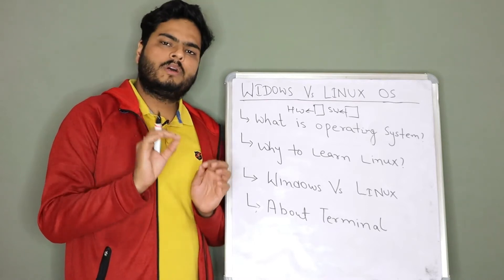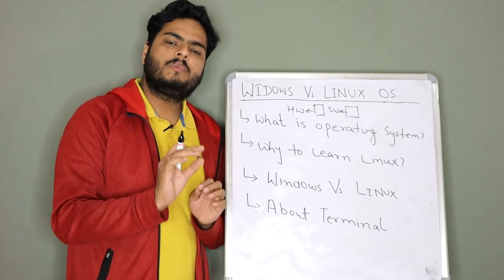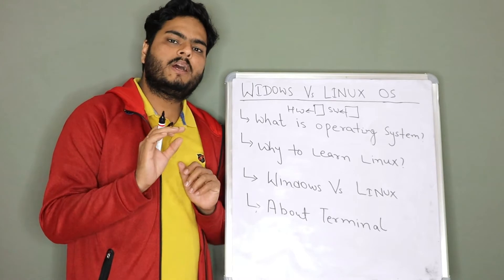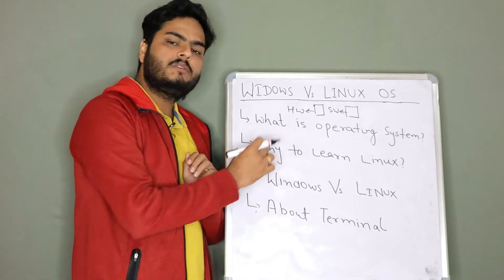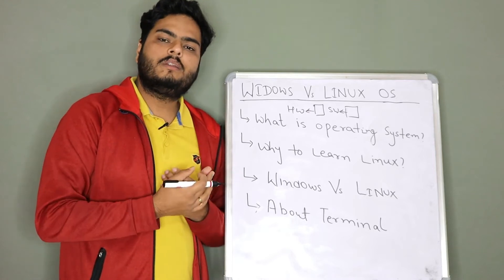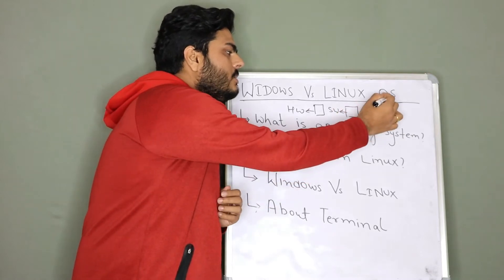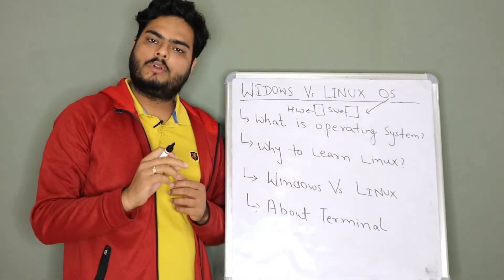Something which you can touch is hardware, which you cannot touch is software. For example, your mouse, your screen, your motherboard, your RAM, your memories, your keypads, all these things are hardware because you can touch it. And something which you cannot touch where logics are written is a software. Operating system is the most important software of your computer.